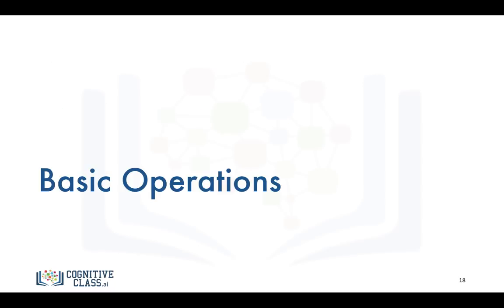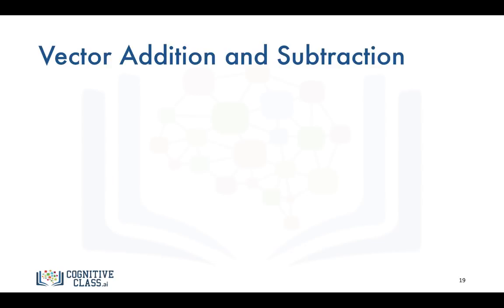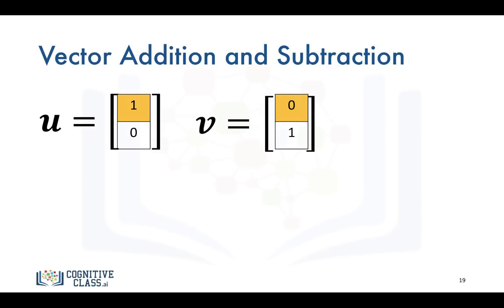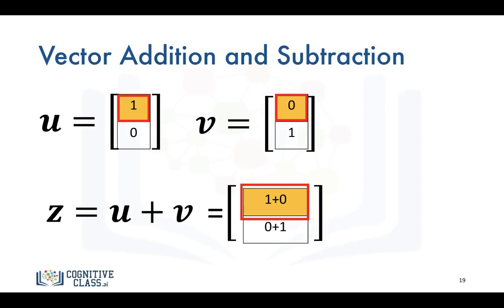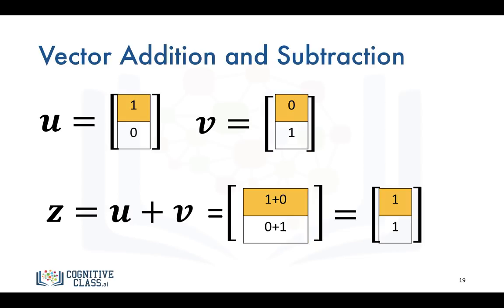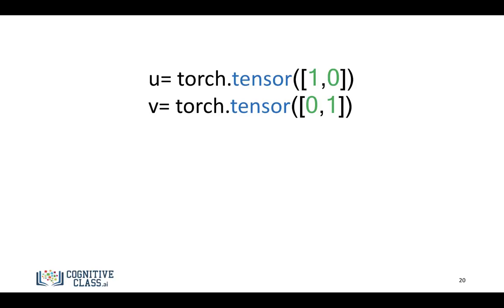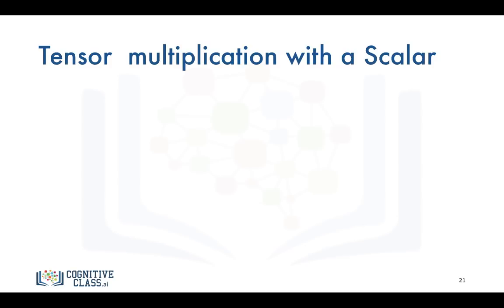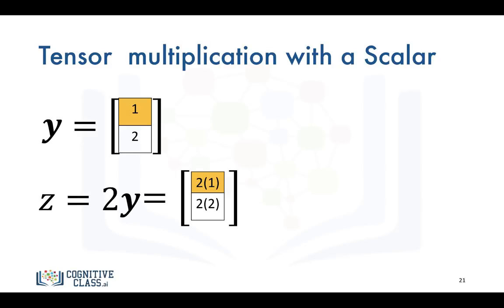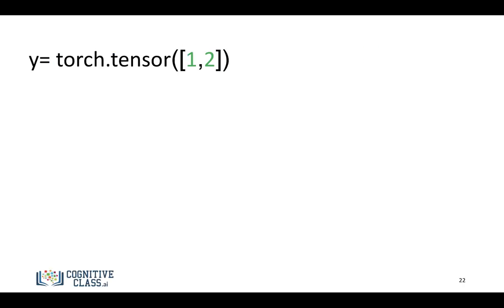Now let's go over some basic operations with PyTorch tensors. Tensors behave a lot like vectors, so we can perform vector addition and subtraction. We have tensor U and tensor V — when we add them, the first element of Z corresponds to the addition of the first elements in U and V. In PyTorch, we create tensors U and V and simply add them. We can also multiply tensors with a scalar, identical to multiplying a vector with a scalar. We create tensor Y, multiply it by 2, and assign it to tensor Z, which multiplies every element in Y by 2.